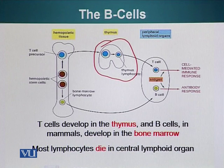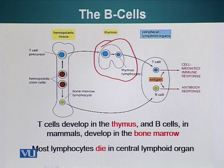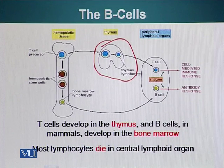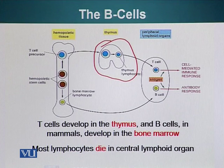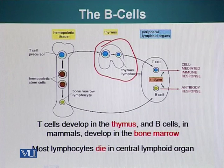These cells are called B cells because they were found to mature in the bursa fabricius of birds. In humans, we don't have bursa fabricius — the B cells mature in bone marrow and then migrate to lymphoid organs such as lymph nodes, and that is where they are educated.